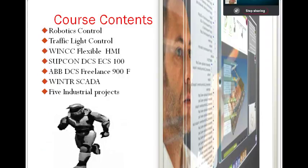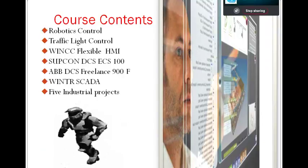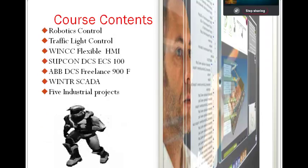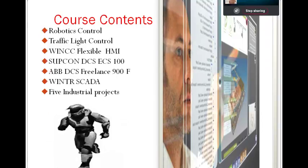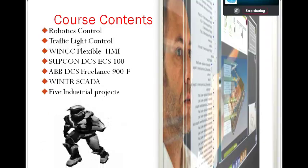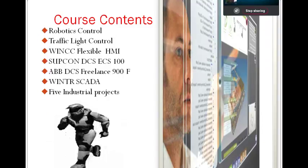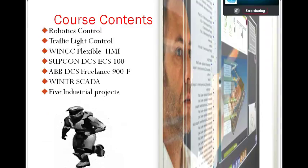We will go ahead with a very important topic: ABB Subcon DCS training. The advanced level PLC is coming to an end, and HMI is also ending. Now we progress with Subcon DCS — we will use ECS 100 DCS and also train on ABB DCS Freelance 900F, with the DVD posted to your home address by ABB officials. We will also cover WinTR SCADA software with five industrial projects as part of those sessions.